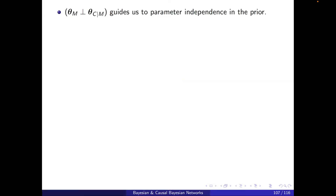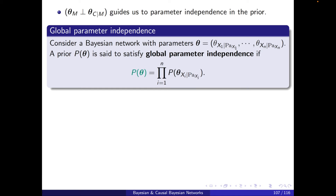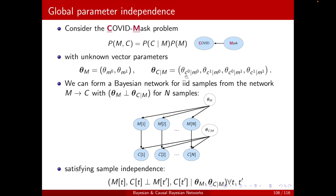This independence between theta_m and theta_cm guides us to parameter independence in the prior. Formalizing it: a prior P of theta satisfies global parameter independence if the prior can be decomposed into local terms of P of theta xi conditioned on parents of xi. Note that this is the compact form of xi conditioned on its parents, so it includes all cases from c0 conditioned on m0 all the way to c1 conditioned on m1.